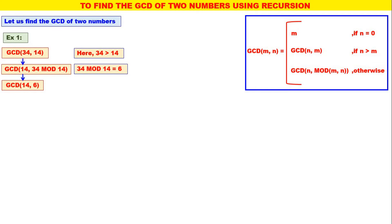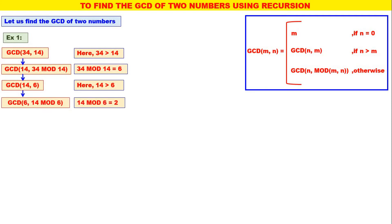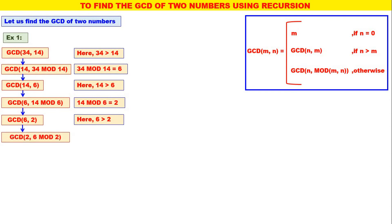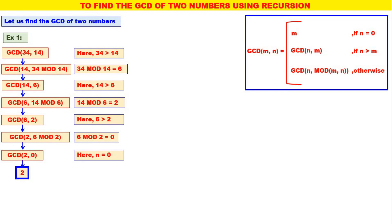In GCD of 14, 6, the second parameter 6 — is it equal to 0? No. And 14 is greater than 6. Therefore, this should call GCD of 6, 14 mod 6. What is 14 mod 6? 2. Therefore, this will call GCD of 6, 2. In GCD of 6, 2, is the second parameter equal to 0? No. And 6 is greater than 2. Therefore, this calls GCD of 2, 6 mod 2. What is 6 mod 2? 0. Therefore, this will be GCD of 2, 0. The second parameter is 0, so M = 2 is the GCD. Therefore, GCD of 34 and 14 is 2.